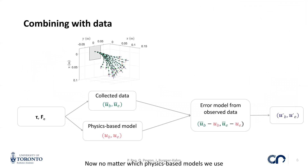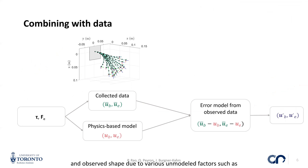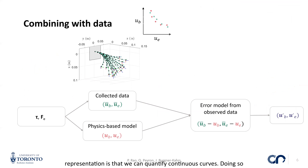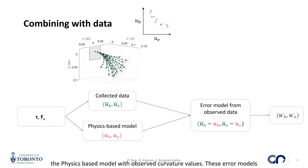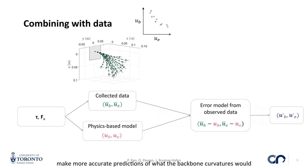No matter which physics-based model we use, there are bound to be discrepancies between the predicted and observed shape due to various unmodeled factors such as manufacturing and assembly errors. An advantage of using a discrete configuration representation is that we can quantify these continuous curves. Doing so helps us build error models that can combine the curvatures calculated from the physics-based model with observed curvature values, to learn these discrepancies and make more accurate predictions of the backbone curvature.